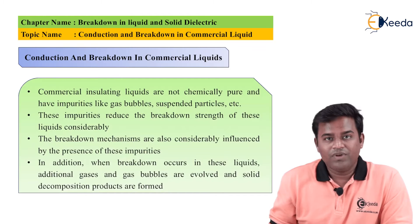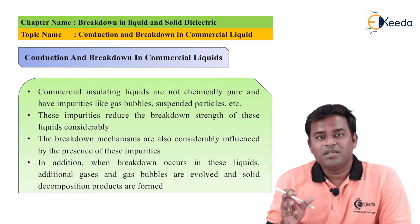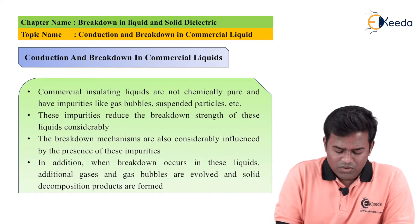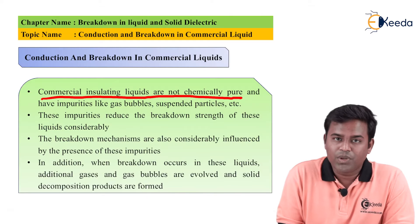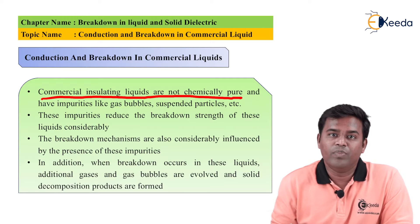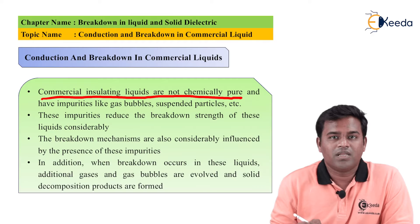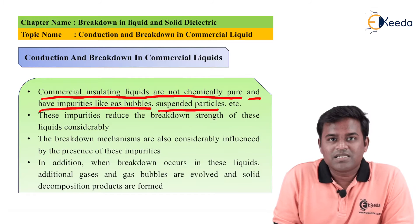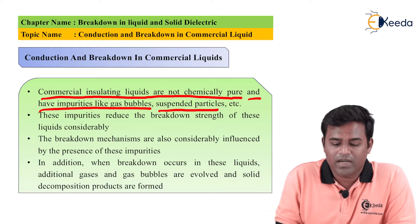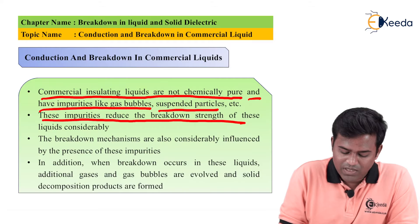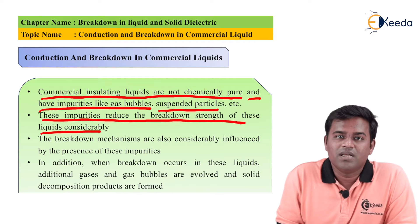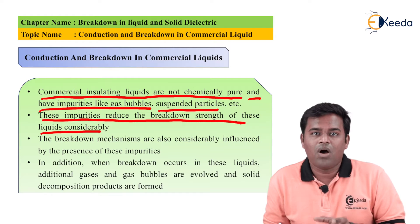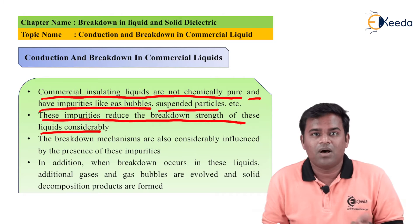So when conduction and breakdown will happen in commercial liquid: first, what is meant by commercial liquid? Commercial insulating liquids are not chemically pure — they initially contain impurities in the form of solid particles, gas pockets, gas bubbles, or suspended particles. Suspended particles means small spherical solid particles. These impurities reduce the breakdown strength of the liquid considerably, compared with gaseous medium or pure liquid medium.